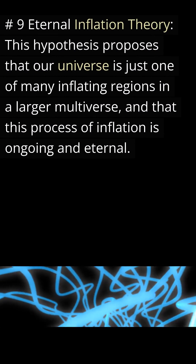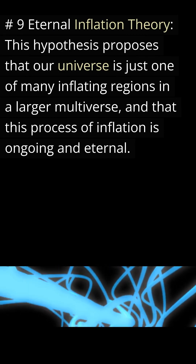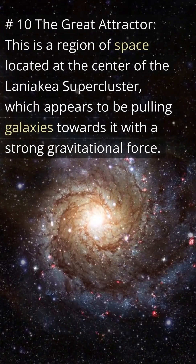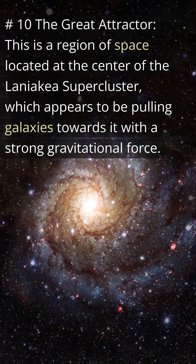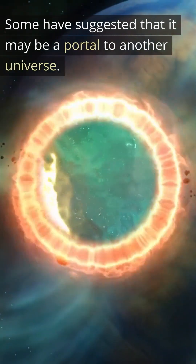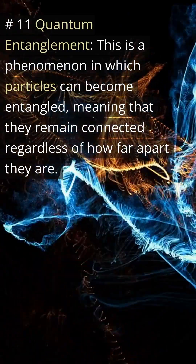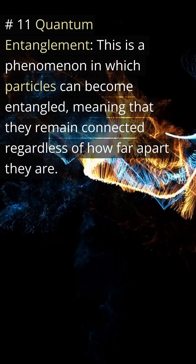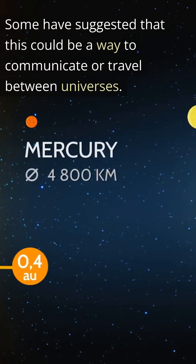Number nine: eternal inflation theory — this hypothesis proposes that our universe is just one of many inflating regions in a larger multiverse, and that this process of inflation is ongoing and eternal. Number ten: the great attractor — a region of space located at the center of the Laniakea supercluster which appears to be pulling galaxies towards it with a strong gravitational force; some have suggested it may be a portal to another universe. Number eleven: quantum entanglement — a phenomenon in which particles can become entangled, remaining connected regardless of how far apart they are, which some suggest could be a way to communicate or travel between universes.